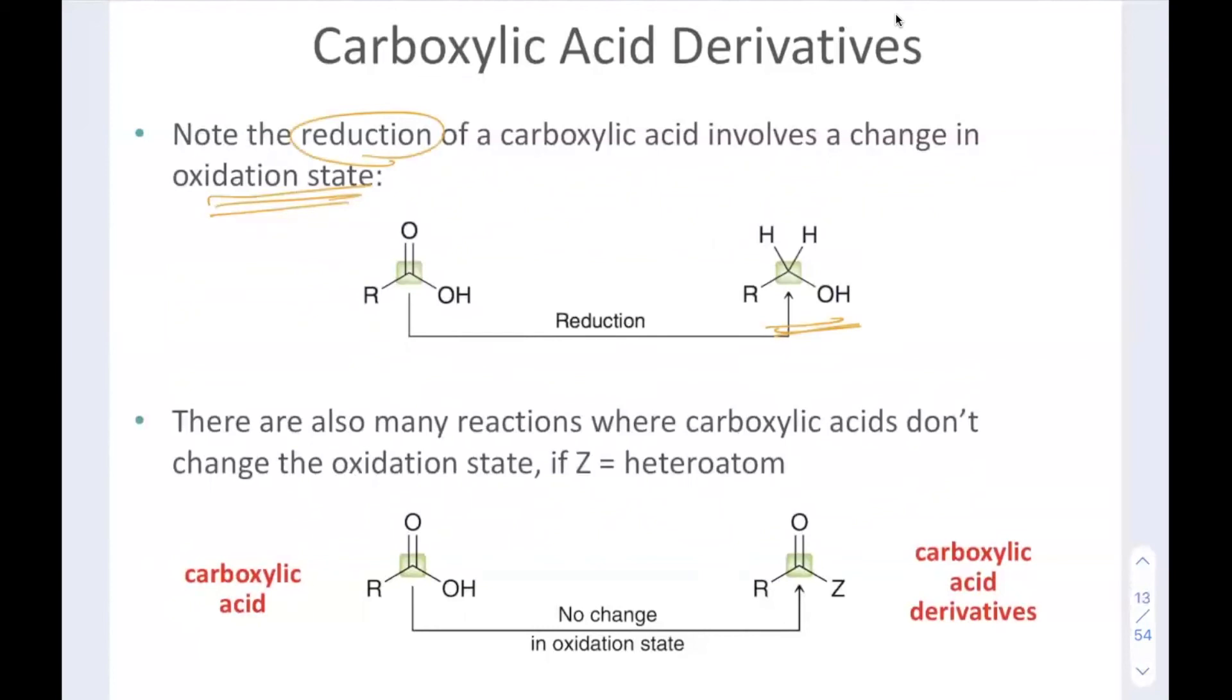In the next section of this chapter, we will talk about reactions where we do not change the oxidation state, so we are maintaining this carbonyl group. There are tons of reactions that carboxylic acids can undergo that get us compounds that also have a carbonyl. This is actually called acyl substitution and we'll get into that in the next video.